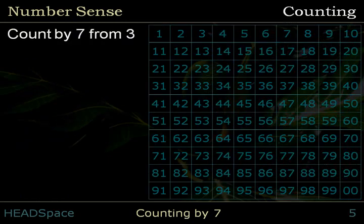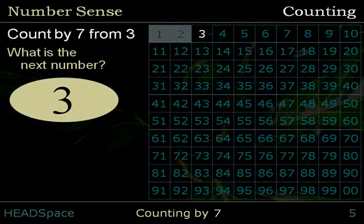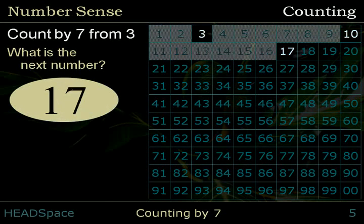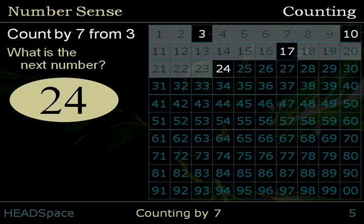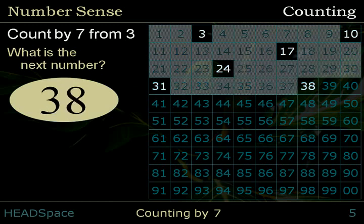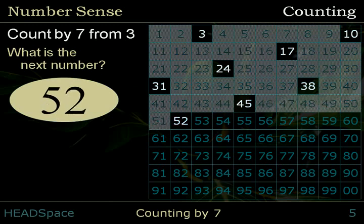Count by 7 from 3. What is the next number? 3, 10, 17, 24, 31, 38, 45, 52, 59.